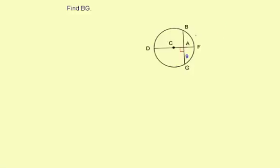Find BG. BG is the distance from B all the way down to G. Notice that we have a diameter that's perpendicular to chord BG, which means that the diameter bisects segment BG.